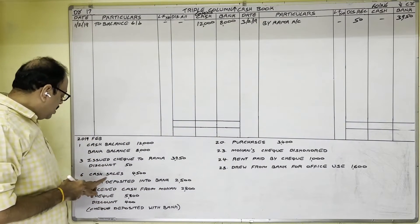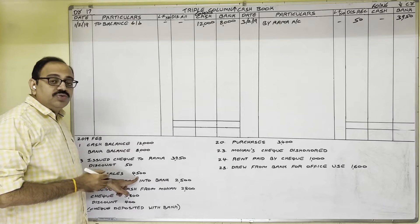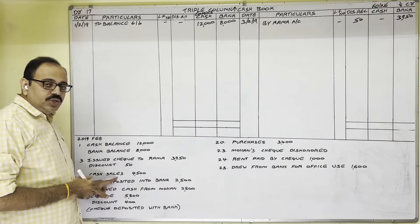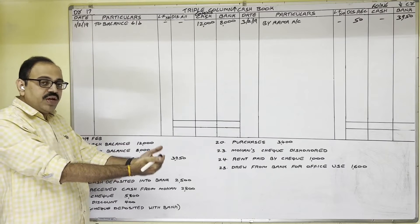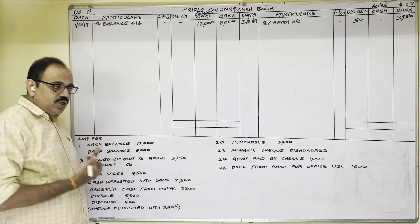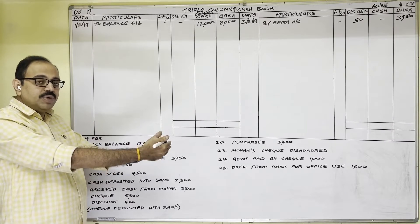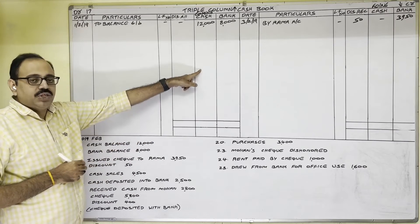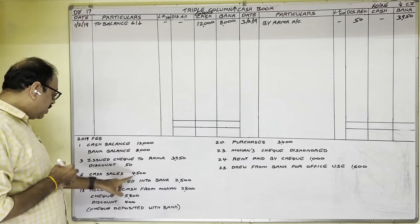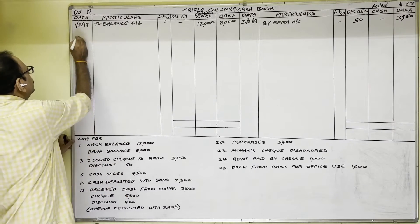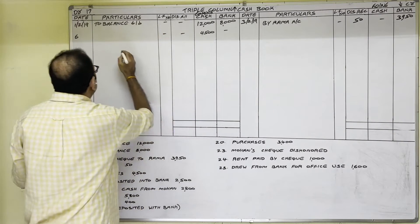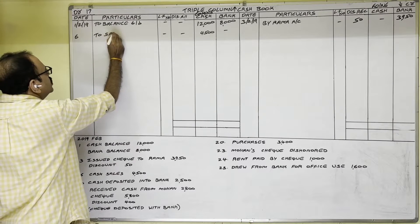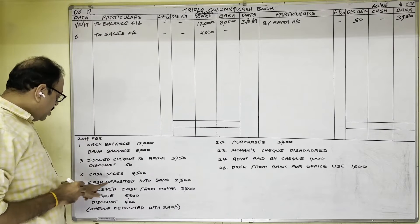6th date: cash 4,500 — we sold goods to a customer for cash. Goods are going out and cash is coming in. Since cash is coming in, write 4,500 on the debit side cash column on 6th date. Goods are sold, so in the particulars column write 'to sales account'.